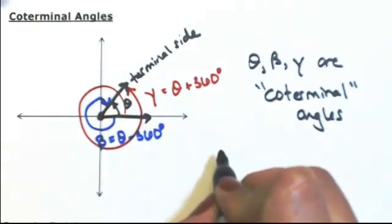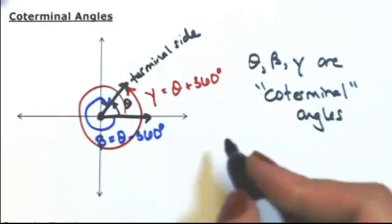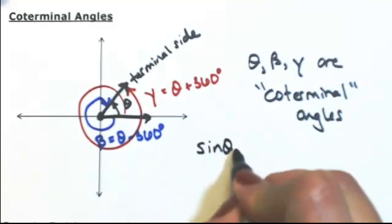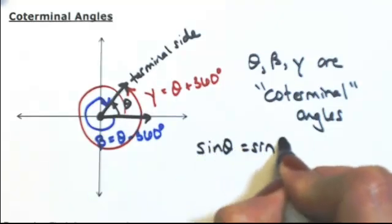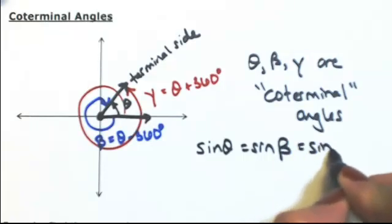The good thing about coterminal angles is that their trig functions will be the same. So if I did the sine of theta, this would equal the sine of beta, which would also equal the sine of gamma.